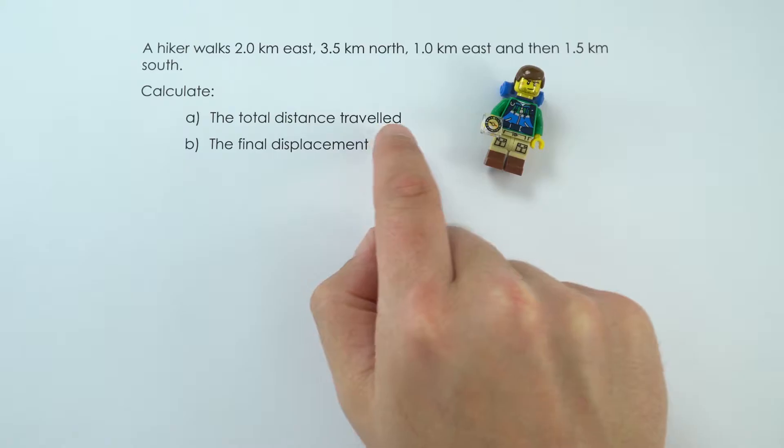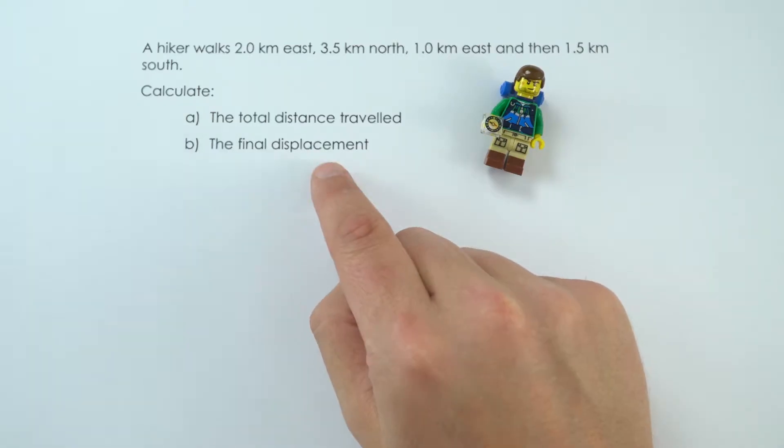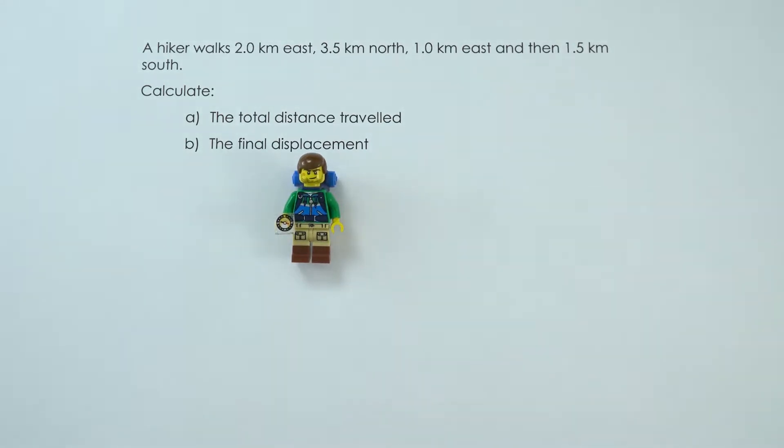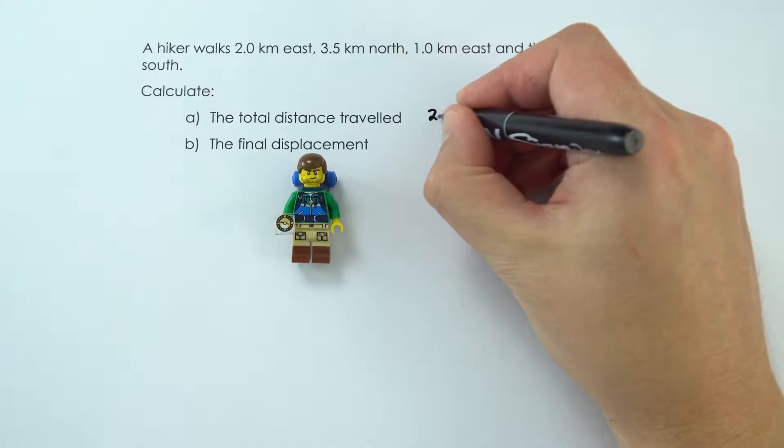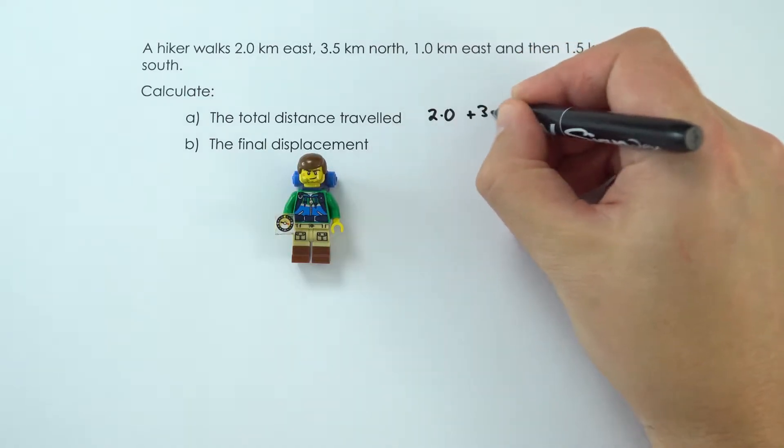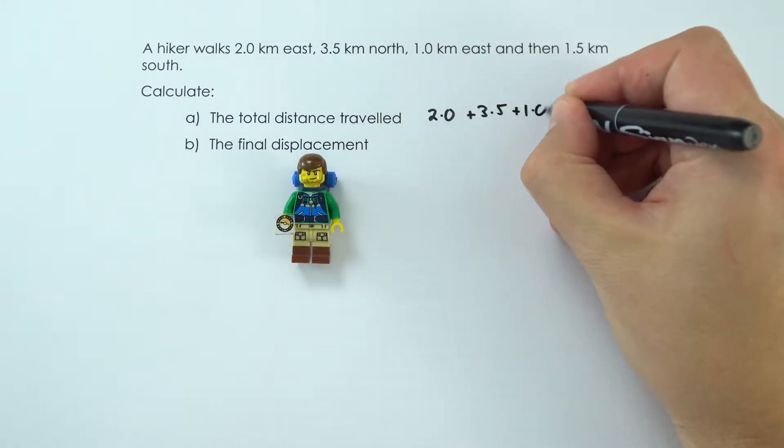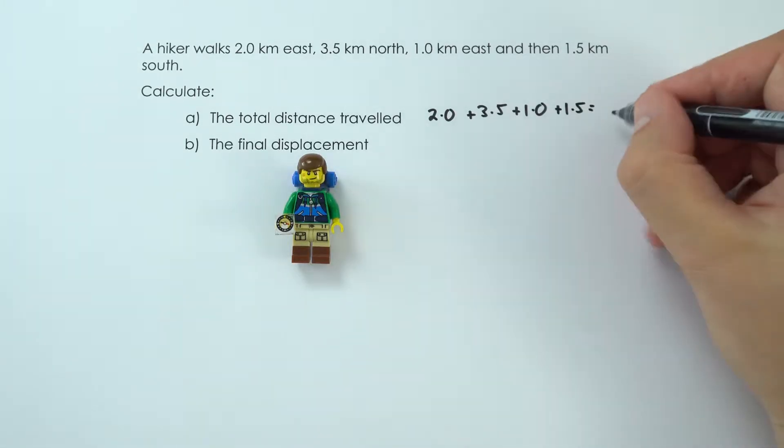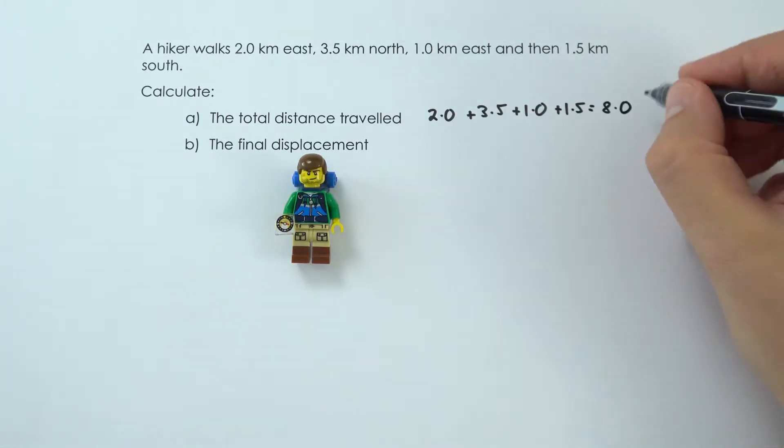The total distance traveled is how far their legs have moved, and the final displacement is how far away they are and in what direction from their starting position. To work out the total distance, we add up these individual distances. That's going to be 2.0 plus 3.5 plus 1.0 plus 1.5, which equals 8.0 kilometers.